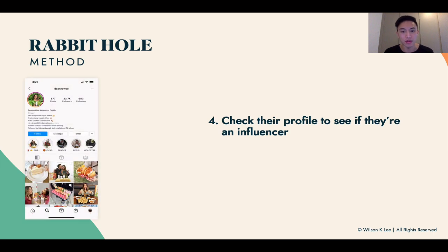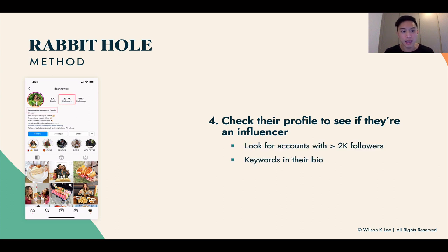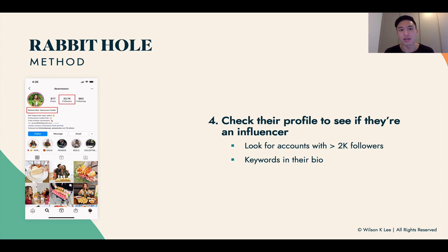Once you're in their account, check their profile to see if they're an actual influencer. The keywords in their bio will tell you — for example, you can see the highlighted red rectangle shows 'Deanna Wu Vancouver Foodie.' You also want to look for accounts with more than 2,000 followers. If they're just starting out with a few hundred you can still work with them, but it will be a longer-term relationship. I'd start with at least 2,000 followers — they have a solid base, some traction, and an engaged audience already.